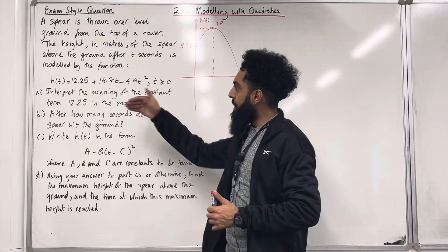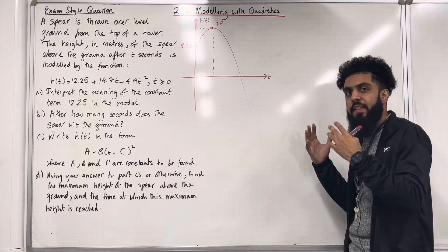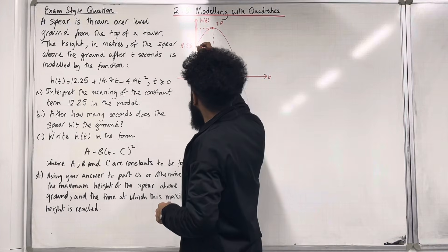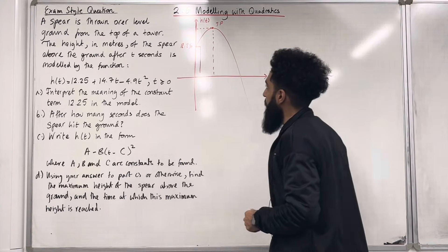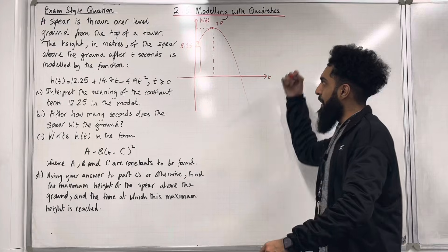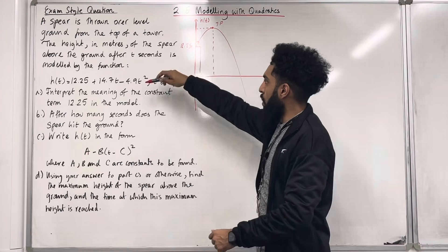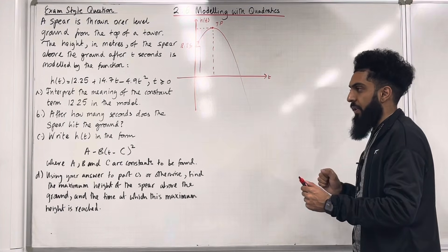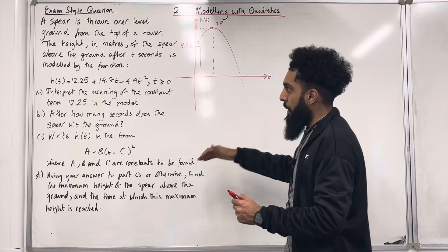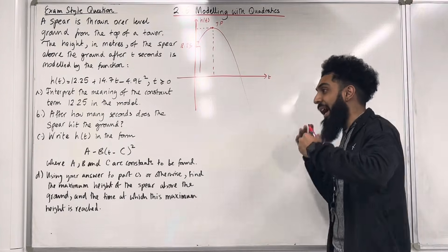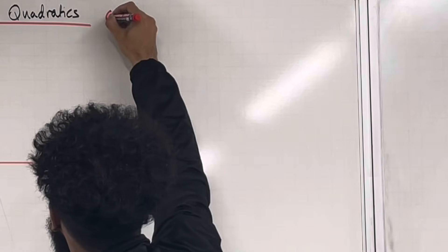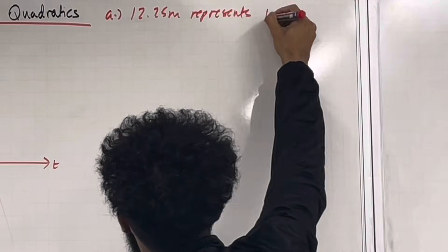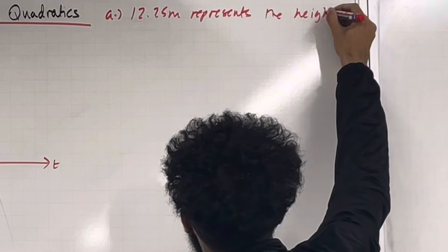Part A. Interpret the meaning of the constant term 12.25 in this model. So 12.25 what does that represent in context? Well it is just the height of the tower. Here's my spear. At time t equals 0 the height according to the function is 12.25 so we haven't really thrown the spear at time t equals 0. So at time t equals 0 our h is 12.25 that represents the height of the tower. So part A, 12.25 meters represents the height of the tower.